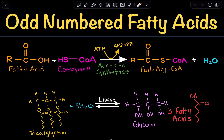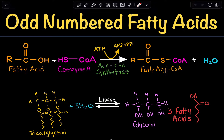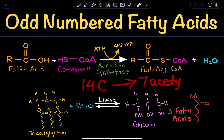When we talk about beta-oxidation in general, we are doing even-numbered fatty acids. We have to think about this mathematically — acetyl-CoA has two carbons. So if we have an even-numbered fatty acid, we will end up with a perfect ratio of creating acetyl-CoA. For example, if we have a fatty acid with 14 carbons and break it down through beta-oxidation, we are going to get seven acetyl-CoAs, because each acetyl-CoA will have two carbons.